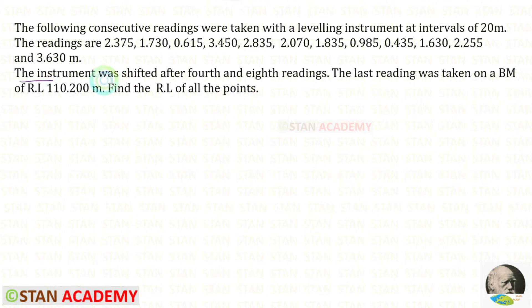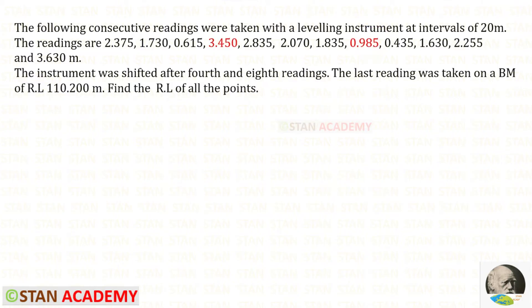The instrument was shifted after the fourth and eighth readings. This is the fourth reading and this is the eighth reading — these two readings are the foresights. I have marked both of them in red color. We know that the last reading should also be the foresight, so there are three foresights. If there are three foresights, there should be three backsights.